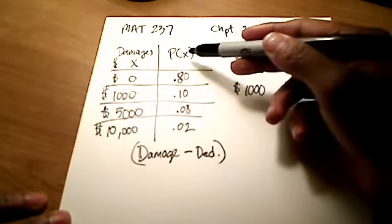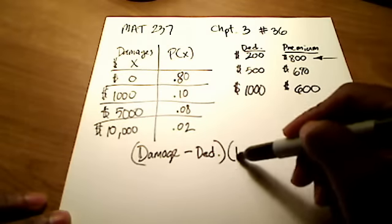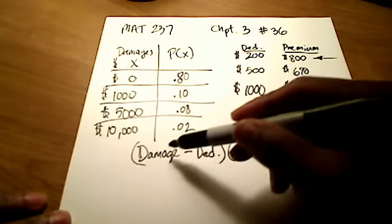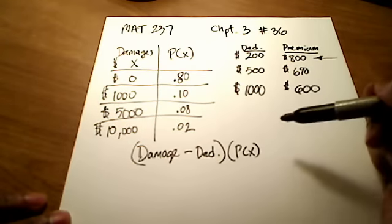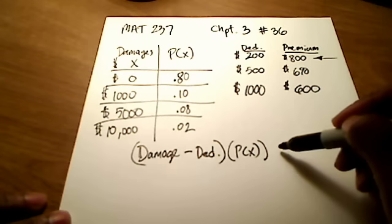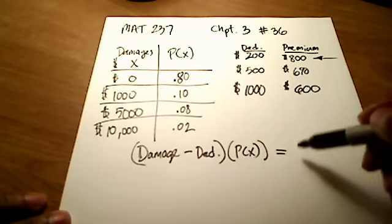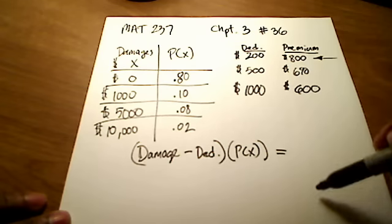That's this column here, my P of x. So we're going to call it P of x here, the probability that that damage occurs. And then what I'm going to do with all of this is I'm going to get a total here, a total amount, and sum them all up.